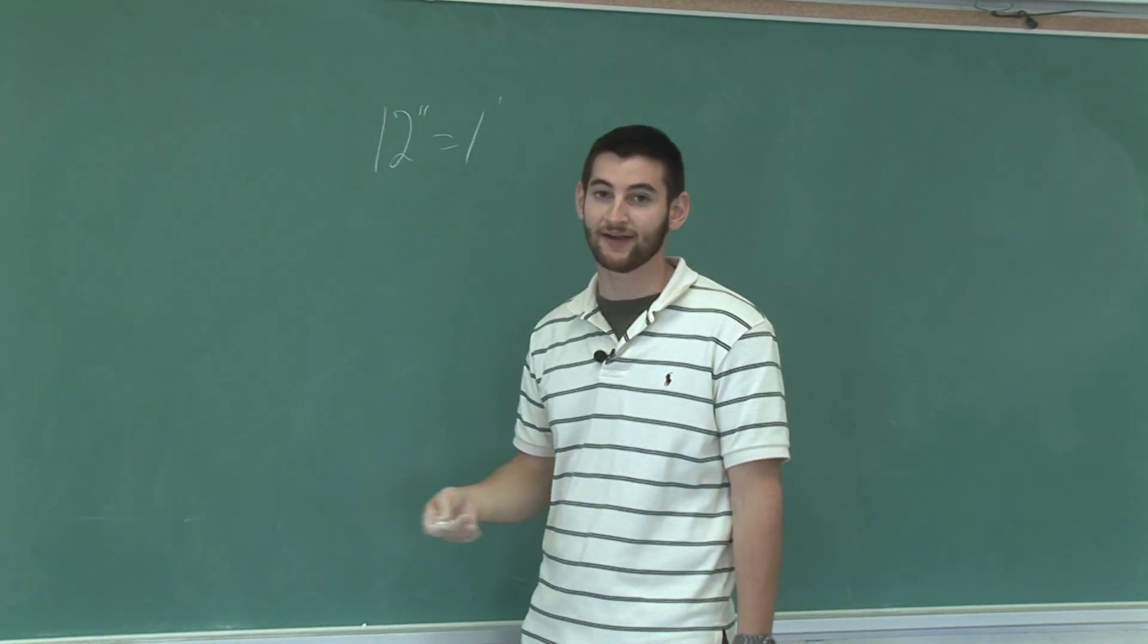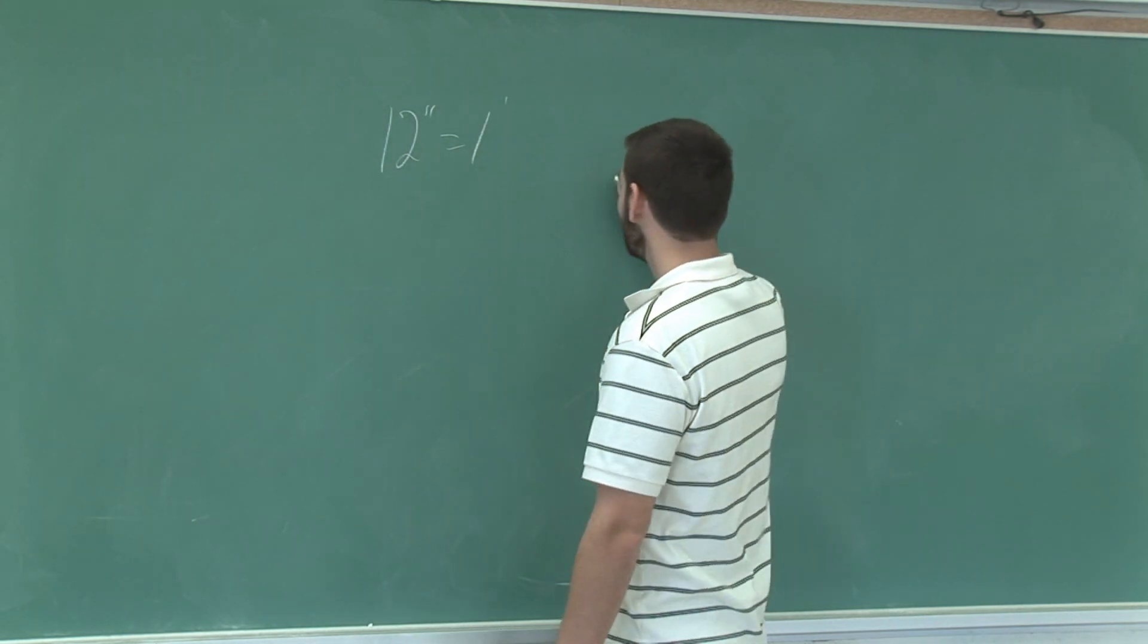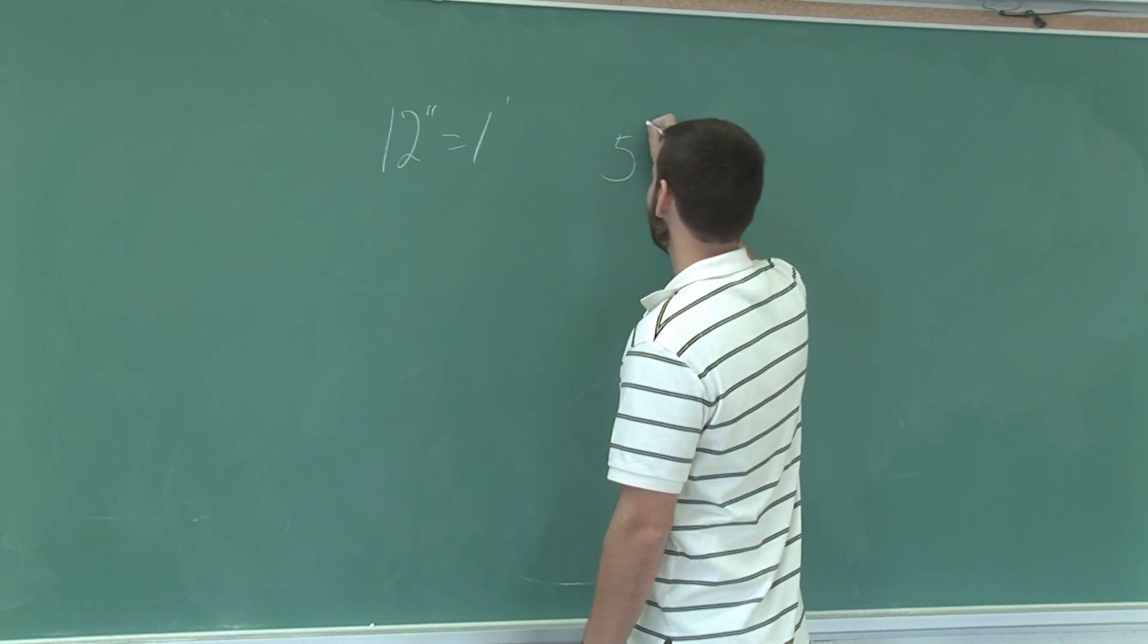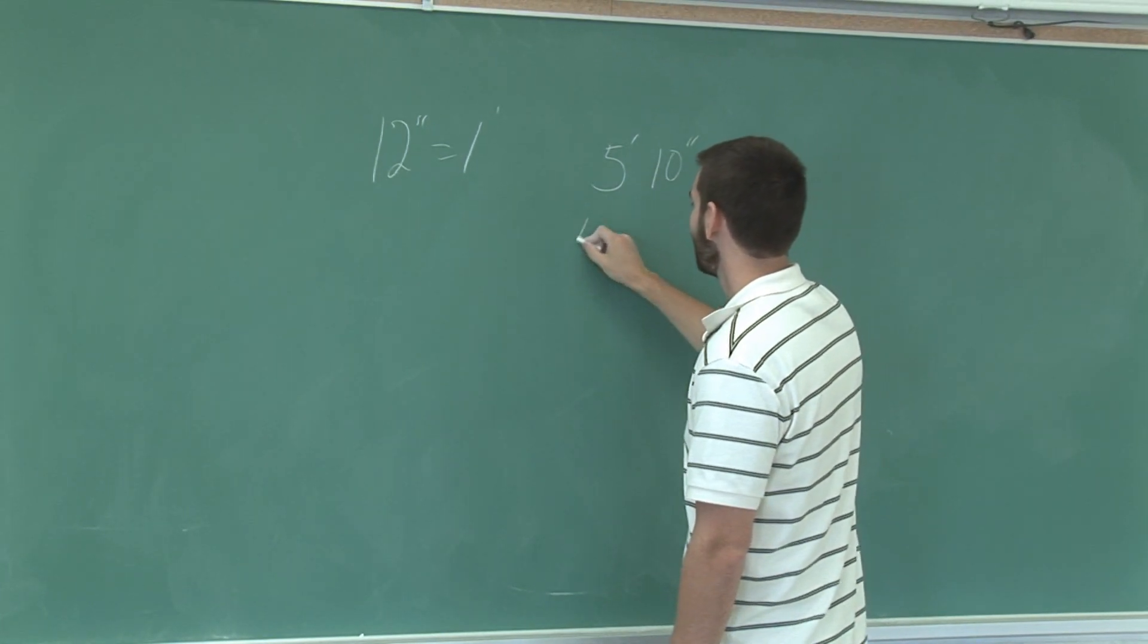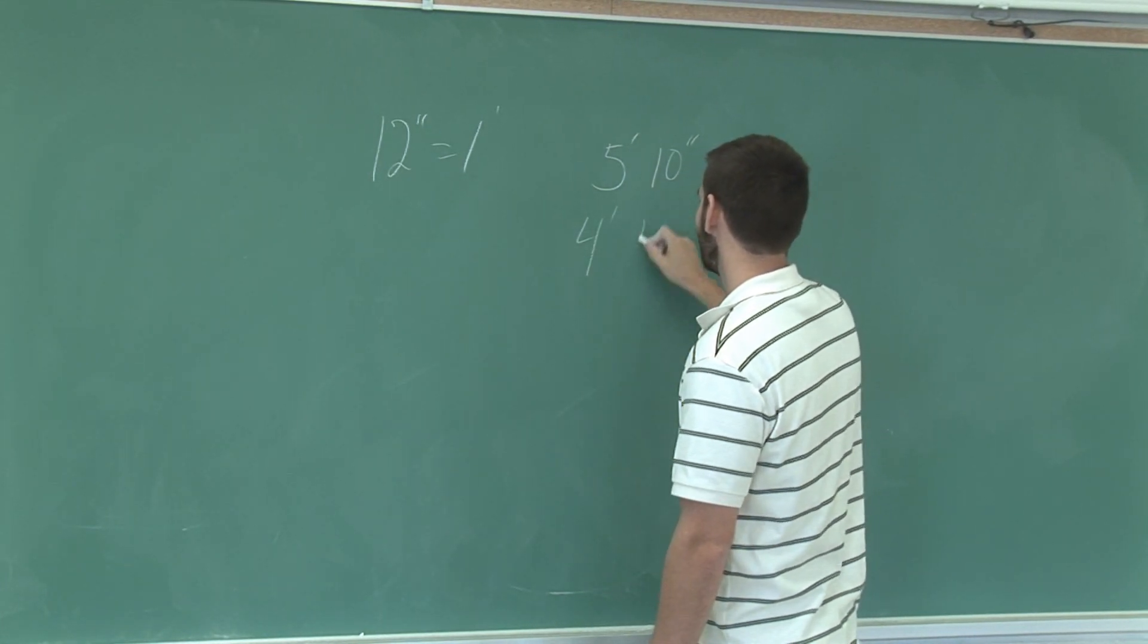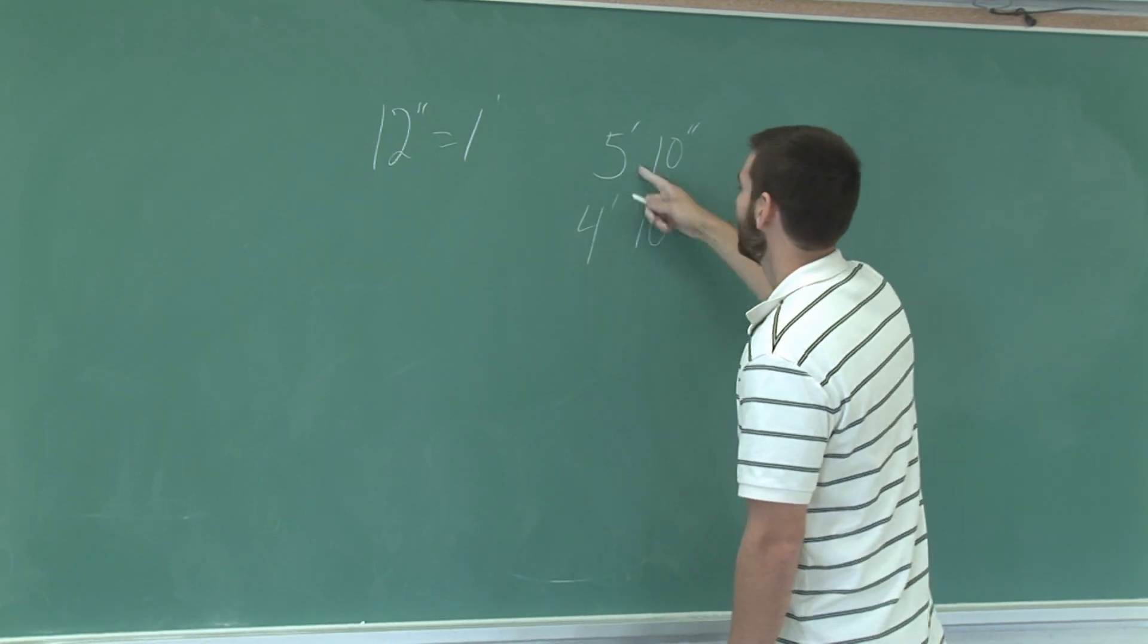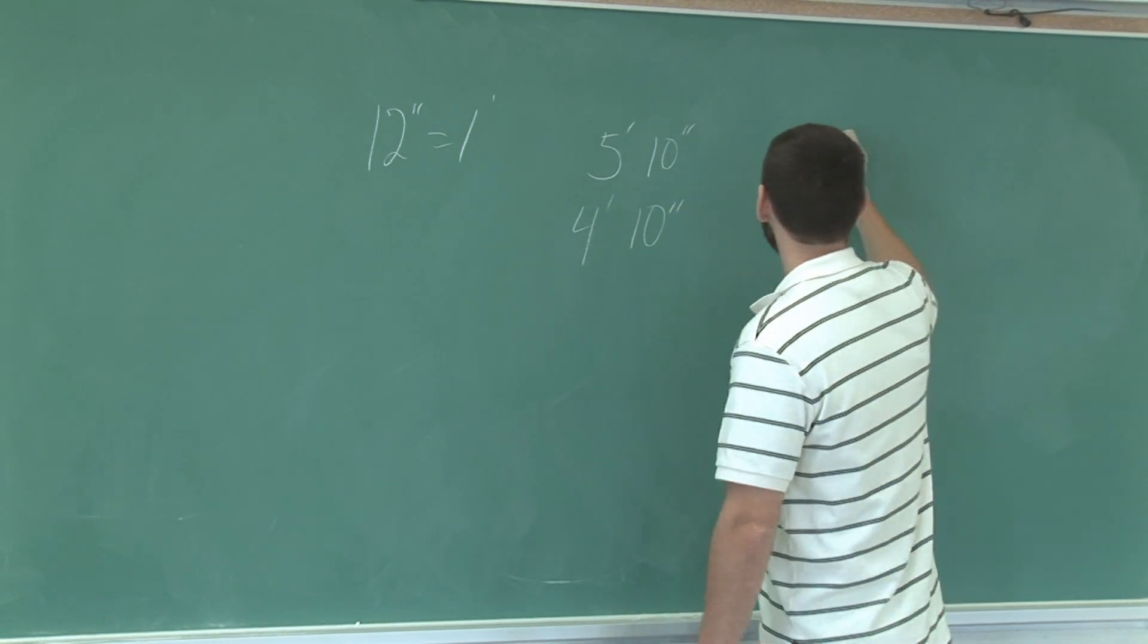So we're going to be working with feet and inches as mixed numbers. If we have somebody who is 5 feet, 10 inches, and we have somebody who is 4 feet, 10 inches, we can easily see that the difference in height is just 1 foot.